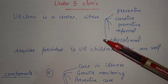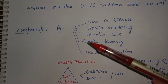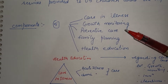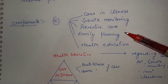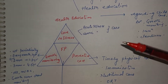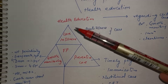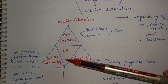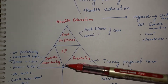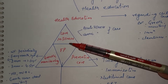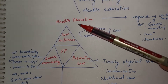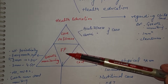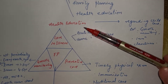There are five components of Under Five Clinic: care in illness, growth monitoring, preventive care, family planning, and health education. The logo of Under Five Clinic is a triangle with an inverted triangle inside it. The outer triangle represents four components — care in illness, growth monitoring, preventive care, and health education — while the inverted triangle represents family planning.